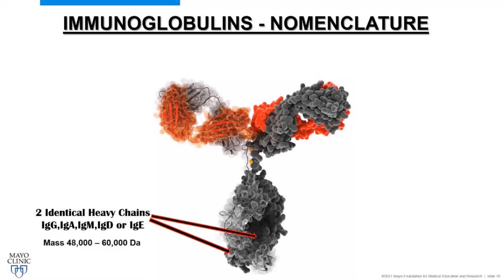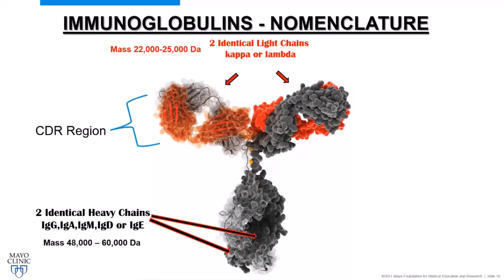The heavy chains have a mass between 48,000 and 60,000 daltons. Along with them, we have two identical light chains — kappa and lambda — with a mass somewhere between 22,000 and 25,000 daltons.